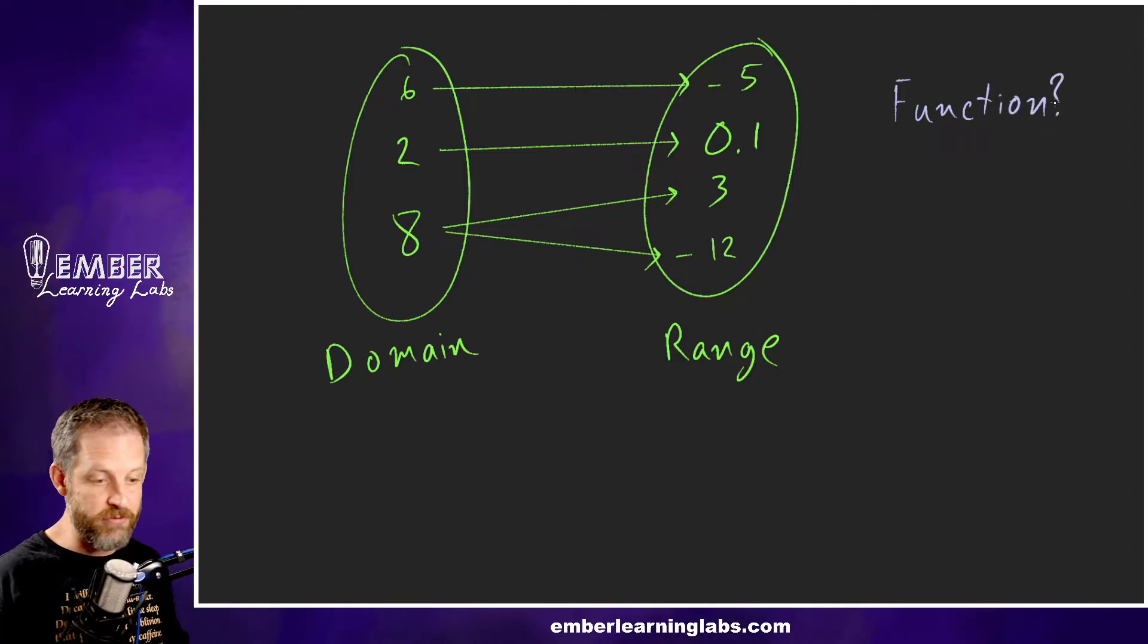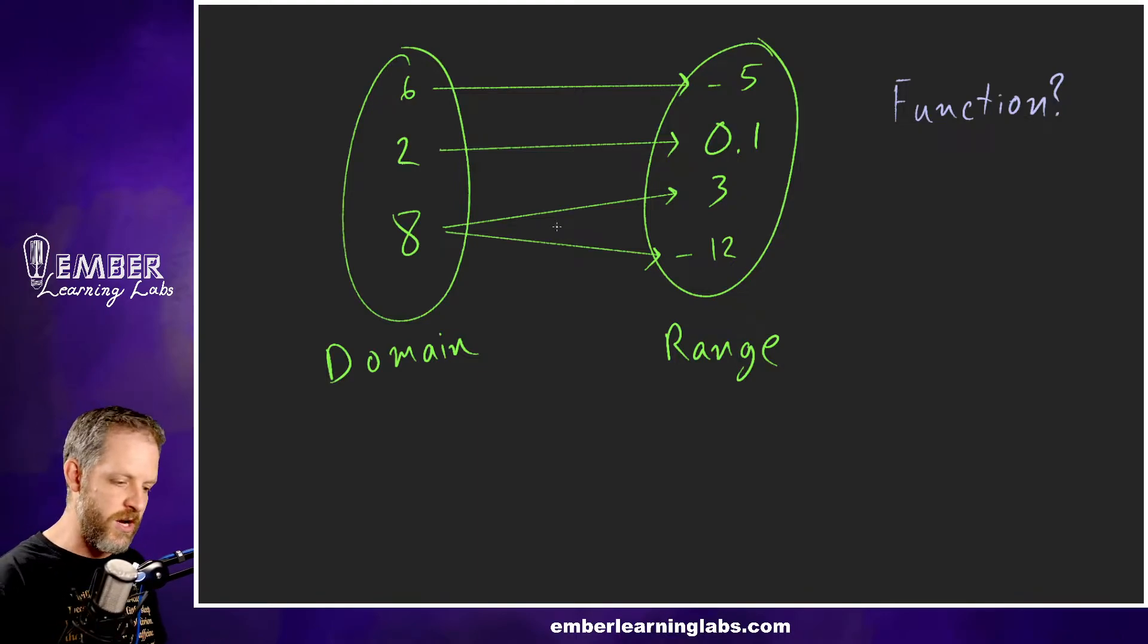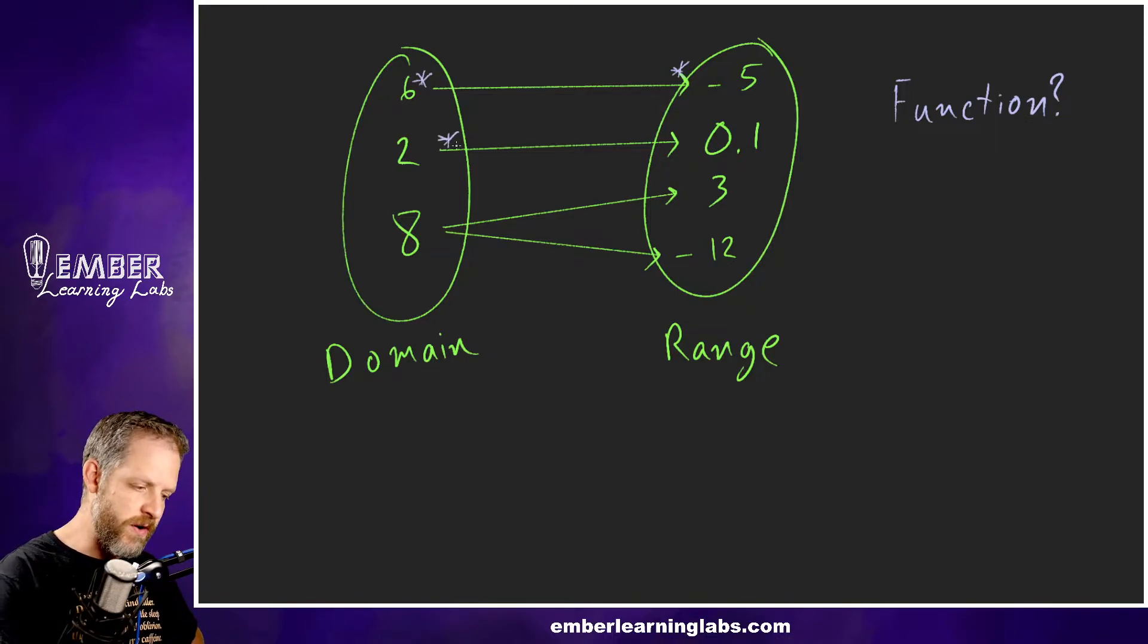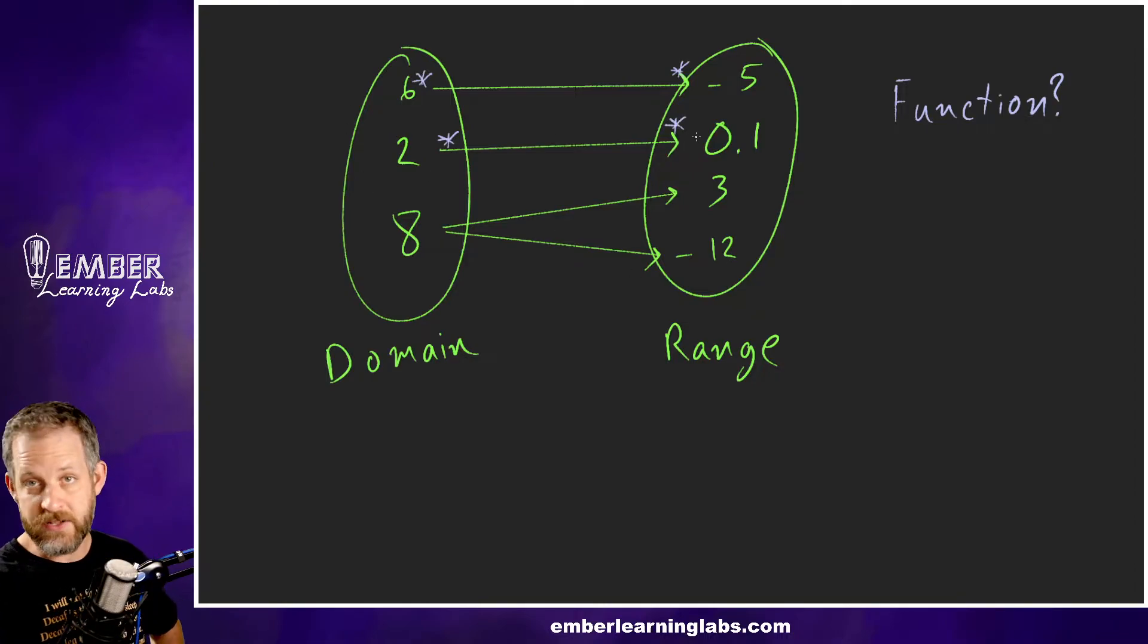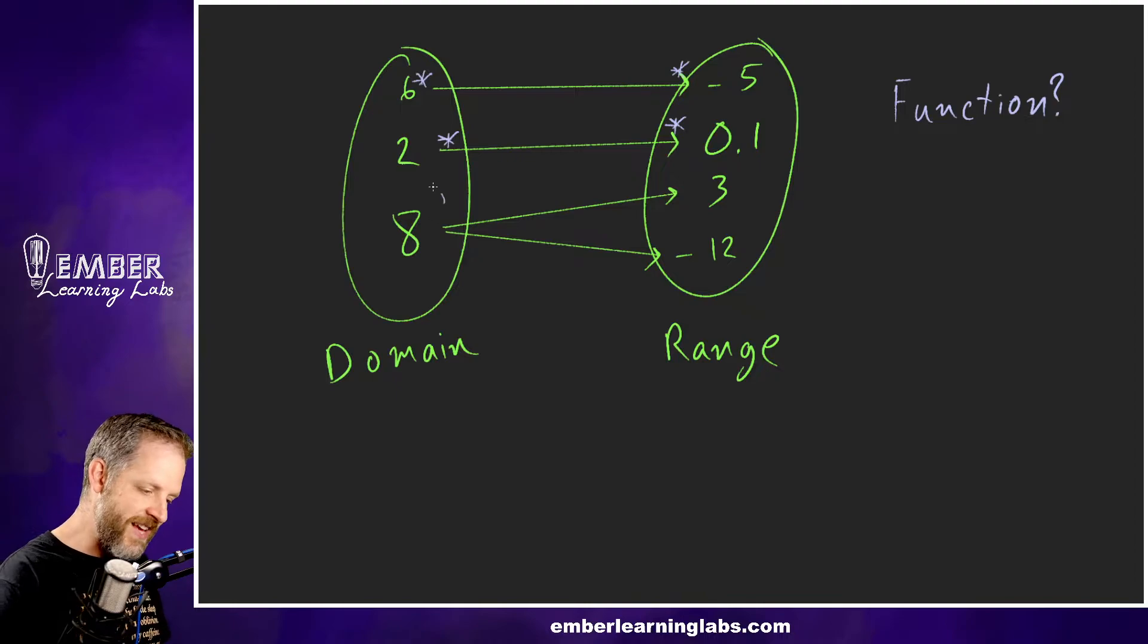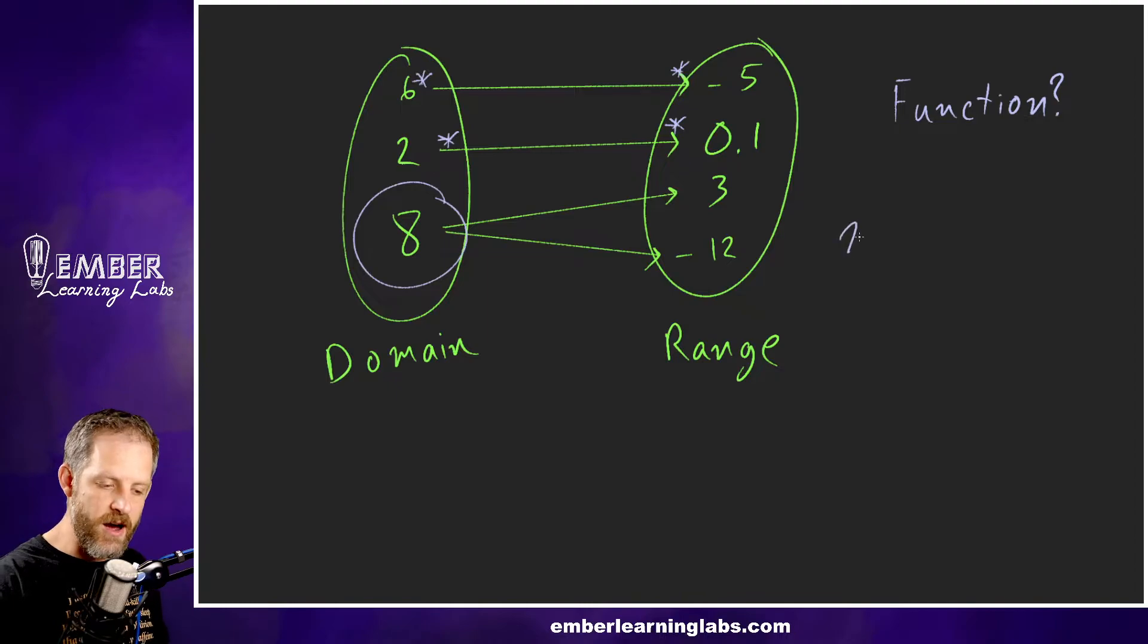If this is review for you, you're already screaming no it's not a function. Let's walk out what's going on here. This 6 only has one output—that's great. This 2 only has one output—every time we put a 2 into this function we get 0.1, that's great. But for this 8, when we put in an 8, we get a 3 or we get a -12 or both, and so that makes this not a function.